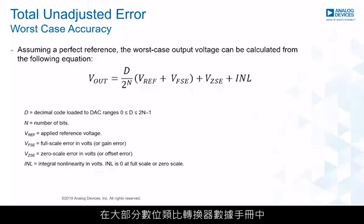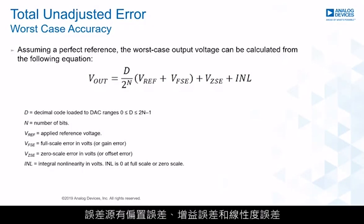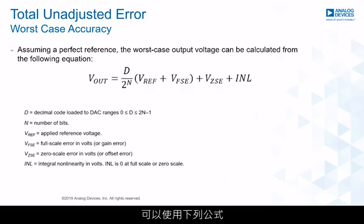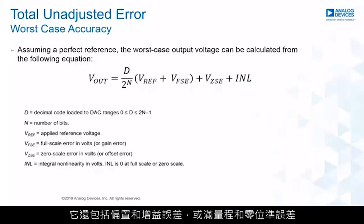If you look at most digital-to-analog converter data sheets, you will see many separate error specifications. These sources of error include offset error, gain error, and linearity errors. If you want to calculate your overall error specification in the absence of a total unadjusted error specification, you can use a formula that accounts for integral nonlinearity, offset error, gain error, as well as full-scale and zero-scale errors, which can be used interchangeably in the formula.